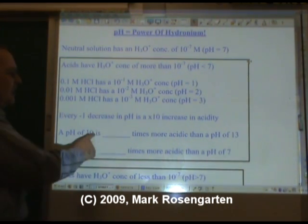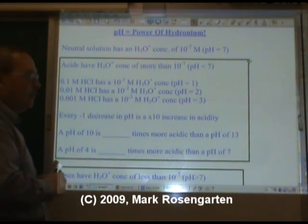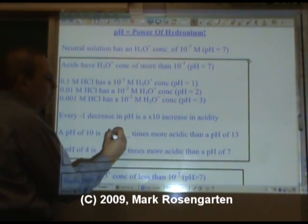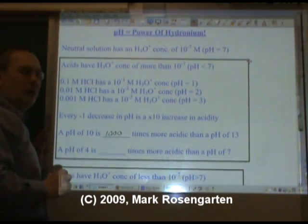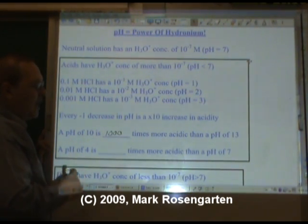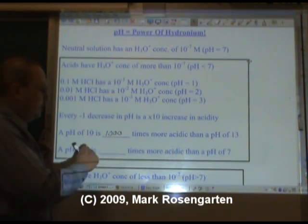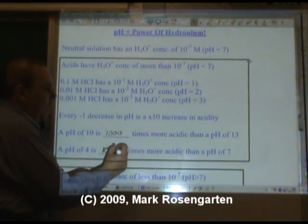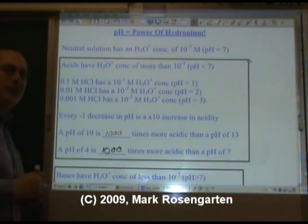So a pH of 0 is how many times more acidic than a pH of 3? Well, that would be 3 powers of 10 difference, 1 followed by 3 zeros. It's 1,000 times more acidic. And a pH of 4 is how many times more acidic than a pH of 7? Same deal. 4 and 7 are 3 apart. That's 10 to the third power, or 1,000 times more acidic.